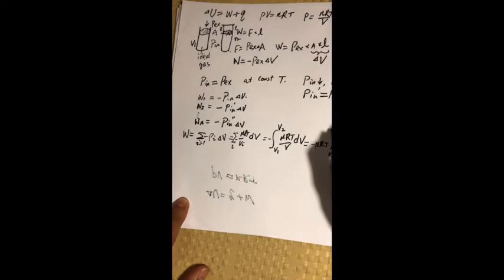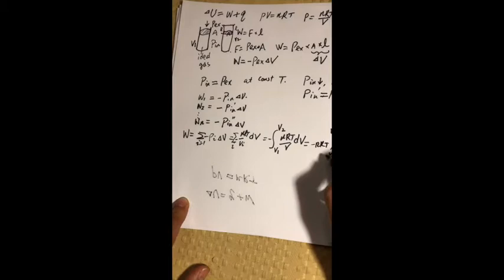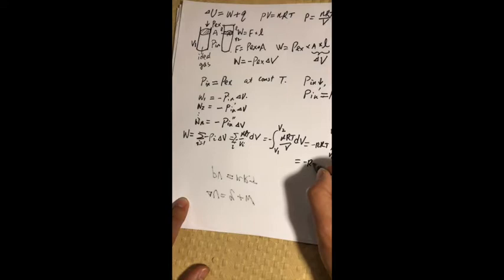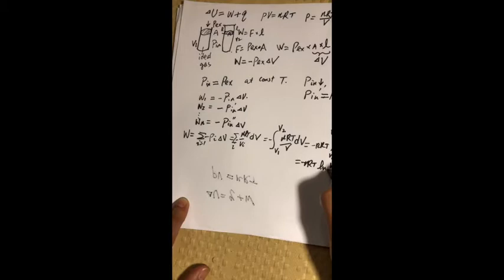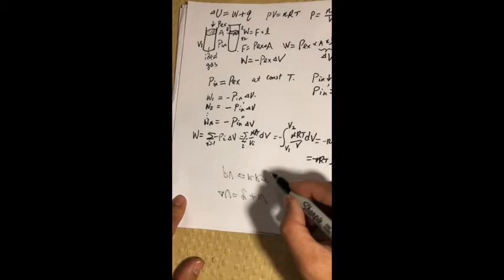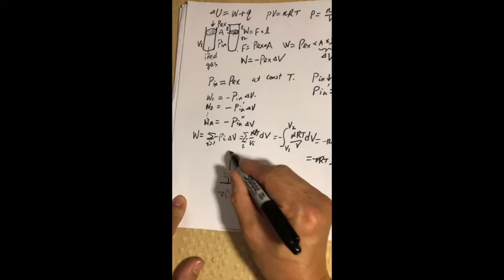Here this is where why we want you to review your calculus background. And this one can be written as minus nRT times the natural log V2 over V1. So virtually this is if you think in terms of the graph as you see in slide seven...